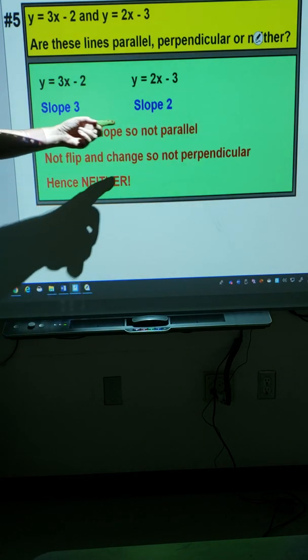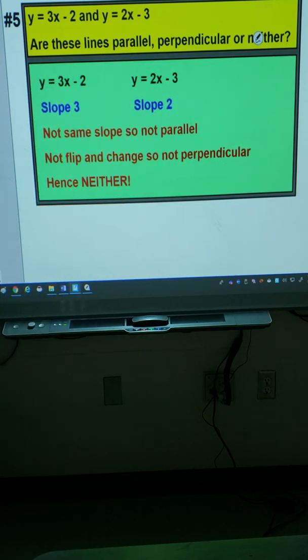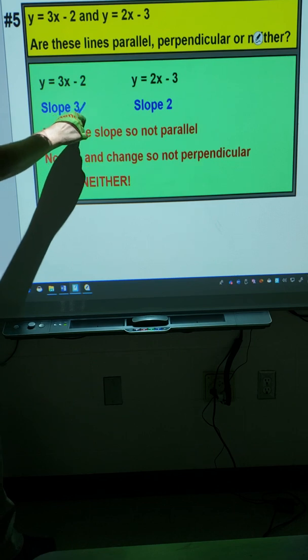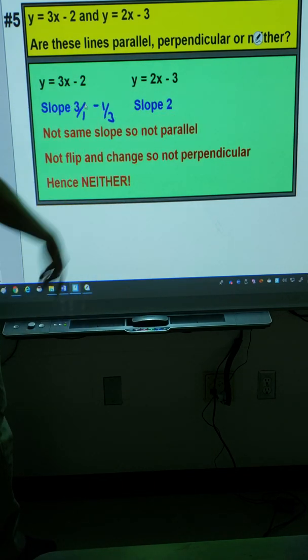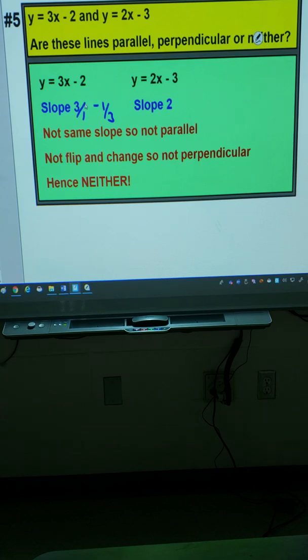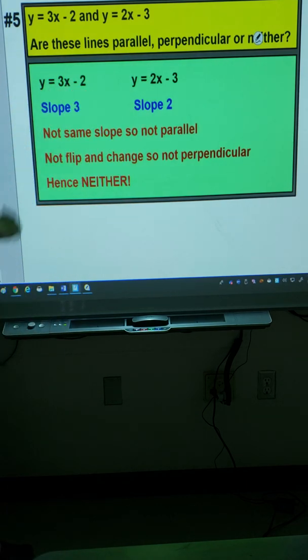Did we flip and change for this one? Not even close. This one's positive. This one's also positive. So I didn't change the sign. And actually if I did flip and change 3 over 1, I would get negative 1 over 3. So as I didn't flip and change, I know this one is not perpendicular. Therefore it must be the last choice. And it's neither of those two things.